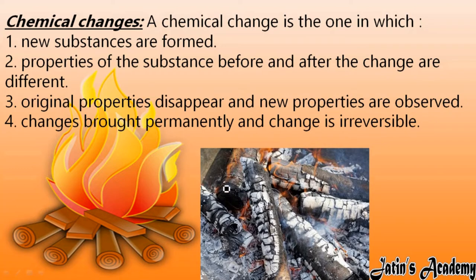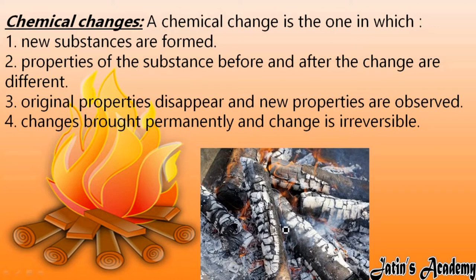So new substances are formed in a chemical change. Properties of the substance before and after the change are different. This wood has different properties and this ash has different properties — they are entirely different. Original properties disappear. Changes are brought permanently and changes are irreversible. When this wood changes into ash, this change is permanent, meaning we cannot convert this ash again into wood, so this is an irreversible change.